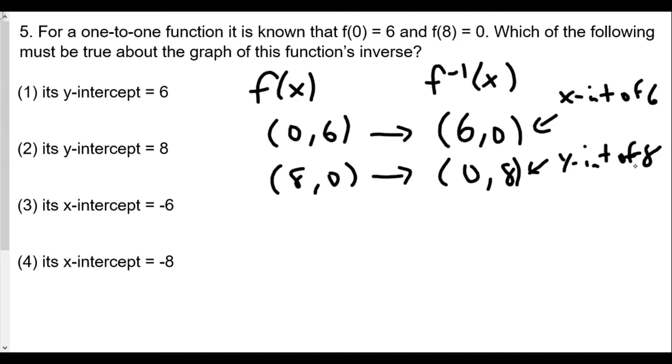The x-intercept is where the value of x from y equals 0. We see in this case that y-intercept of 6, that's not true. x-intercept of negative 6, that's not true. x-intercept of negative 8, that's not true. The only one that's true here is a y-intercept of 8. So if we have coordinates, one way to figure out the answer is just switch x's and y's and then be able to interpret from there.